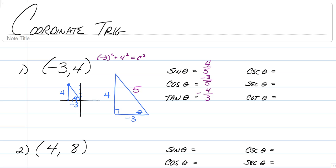Cosecant, secant, and cotangent are just the reciprocals of sine, cosine, and tangent. So once you find those, you're good to go — just flip them. We have 5 fourths, negative 5 thirds, and negative 3 fourths. And that's it. That's how you do coordinate trig.